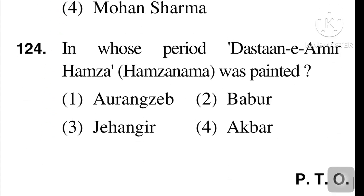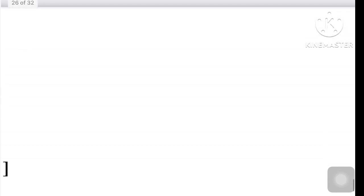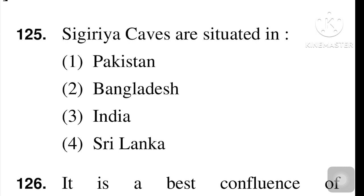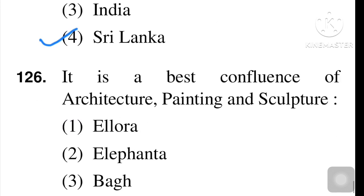Next question: in whose period was Daastaan-e-Amir Hamza (Hamzanama) painted? Akbar period — option number four is the right answer. Next question: Sigiriya caves are situated in Sri Lanka — option number four is the right answer.